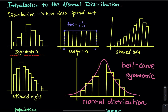The first type is symmetric. Using a histogram, symmetric means we have the mean, the median, and the mode right in the middle, and the left and right hand sides, the bars look symmetrical. The next one is uniform.